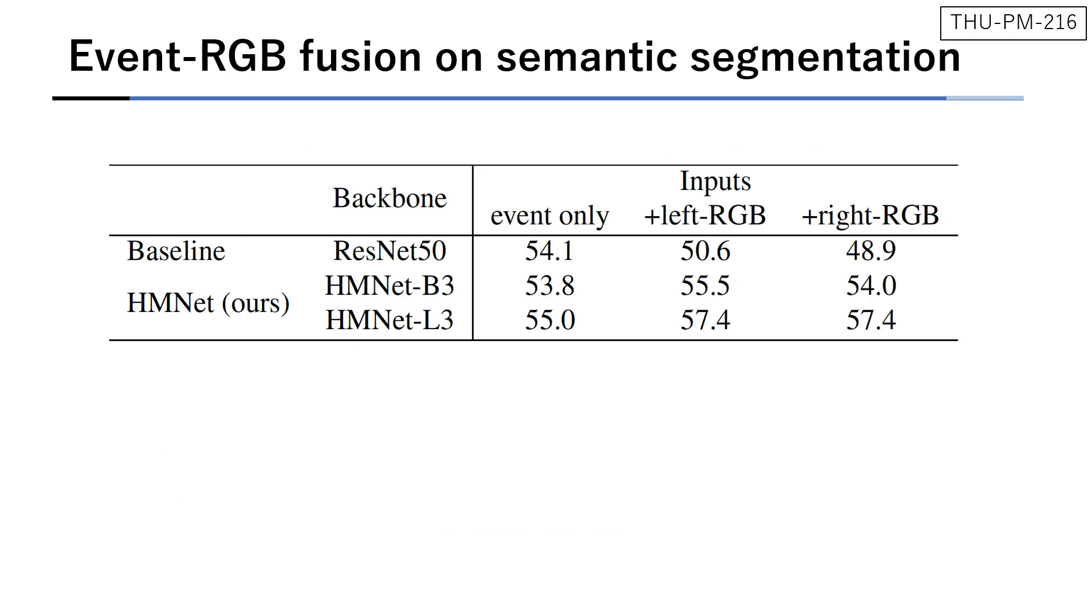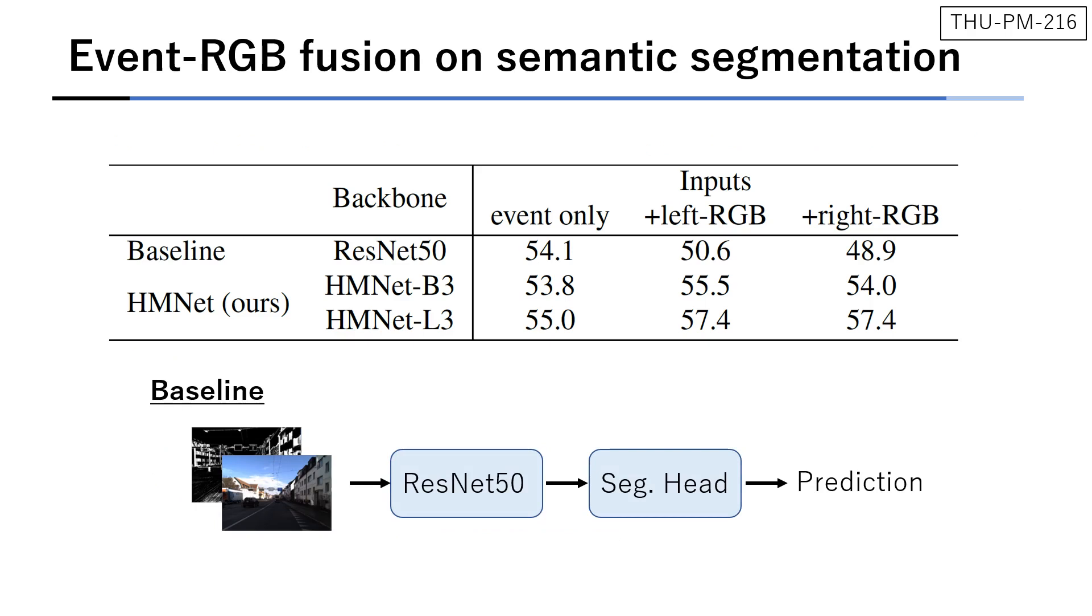The slide shows the experimental result of event RGB fusion. For the baseline, we concatenate an event frame and an RGB frame and feed it to ResNet-50. As a result, the accuracy of the baseline has degraded by RGB fusion. This is due to the temporal and spatial misalignment between the event and RGB frame. On the other hand, our HM net can improve the accuracy with RGB fusion, showing the robustness to the misalignment.